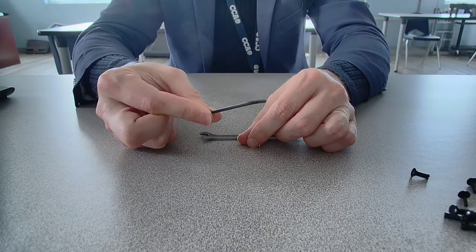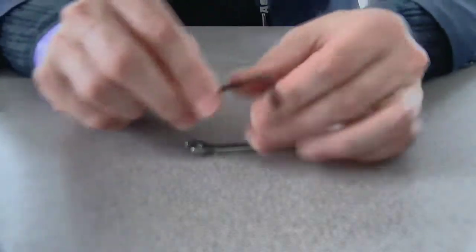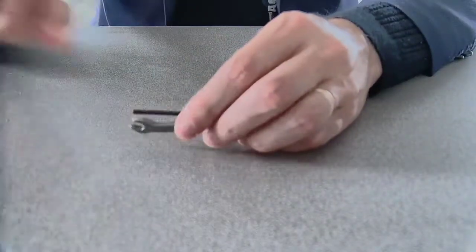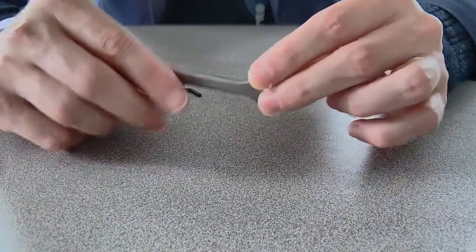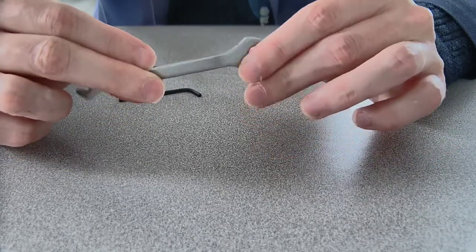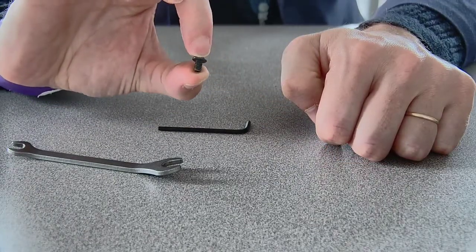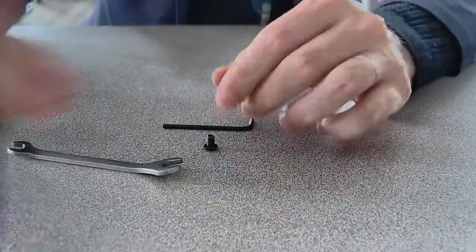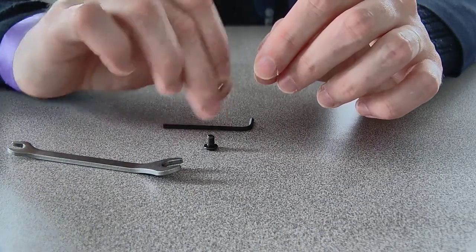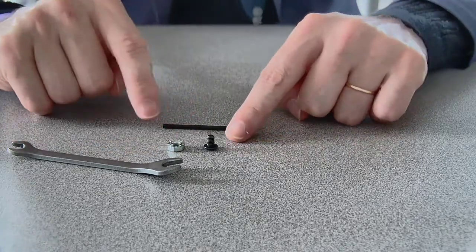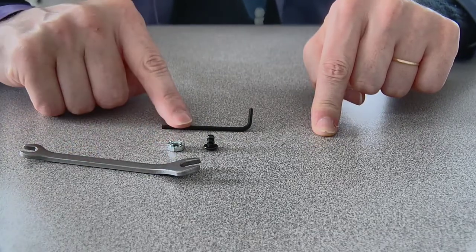First off, this tool is called an Allen key. And this is what's called an open-end wrench. We use these for bolts, or you can call them screws, and nuts. Bolt, nut, open-end wrench, Allen key.